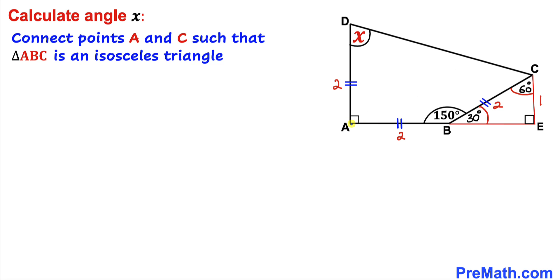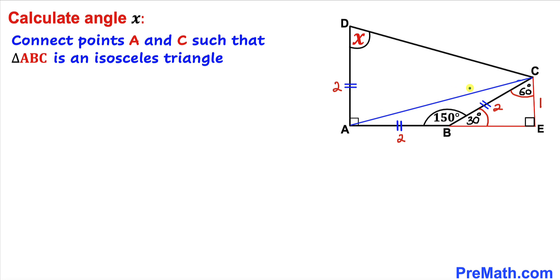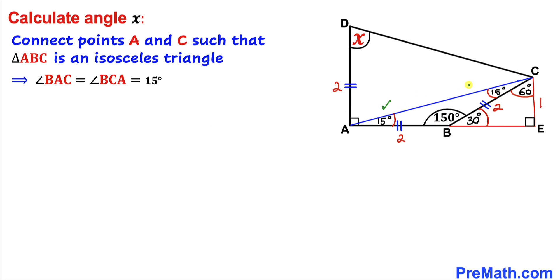Now let's connect points A and C. We can see that triangle ABC is an isosceles triangle since side AB equals side BC. Therefore angles BAC and BCA are congruent. Since angle ABC is 150 degrees, these two base angles must each be 15 degrees, as they sum with 150 to give 180 degrees.